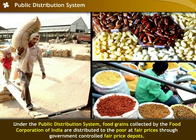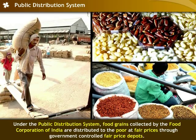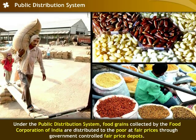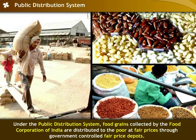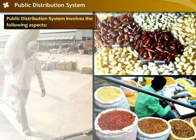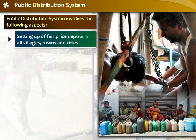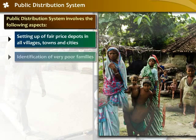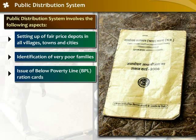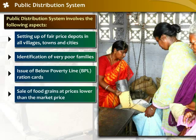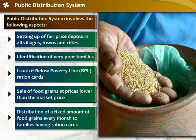Under the public distribution system, the food grains collected by the Food Corporation of India are distributed to the poor at fair prices through government-controlled fair price depots. This includes opening of fair price depots in all villages, towns and cities. Very poor families are identified and below-poverty-line ration cards are issued to them. Grains are sold at the fair price depots at prices lower than the market price, and families having ration cards receive a fixed amount of food grains every month.